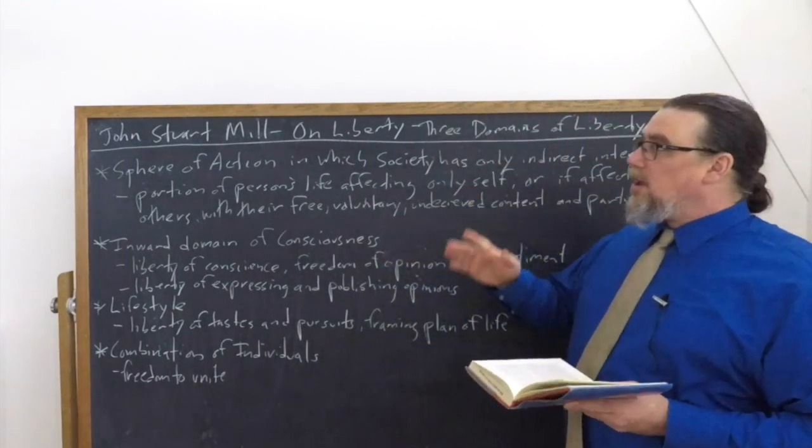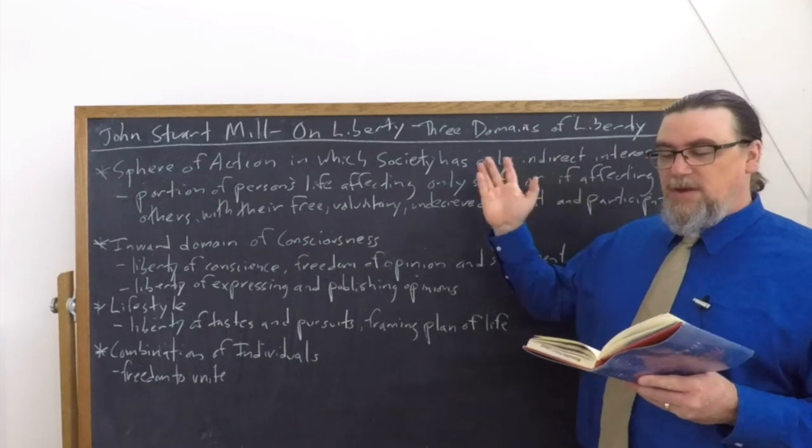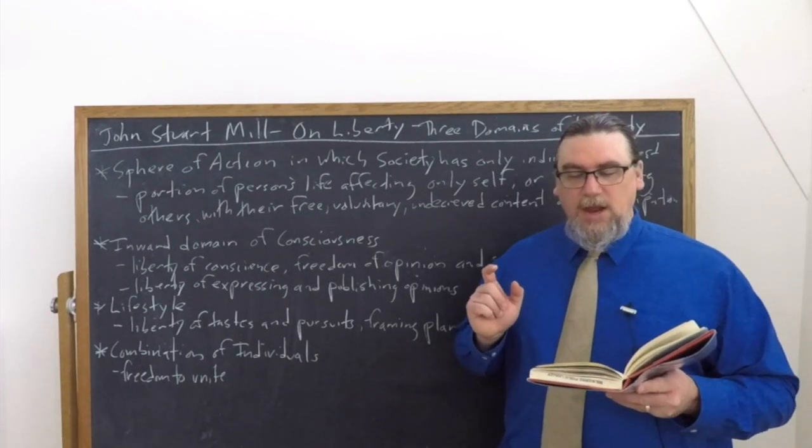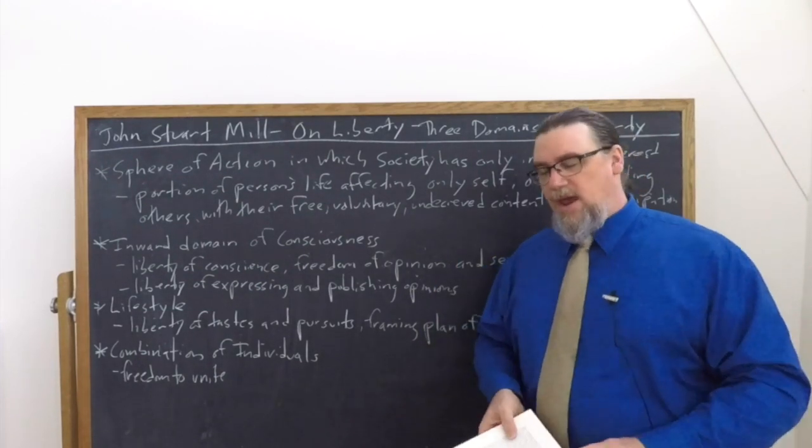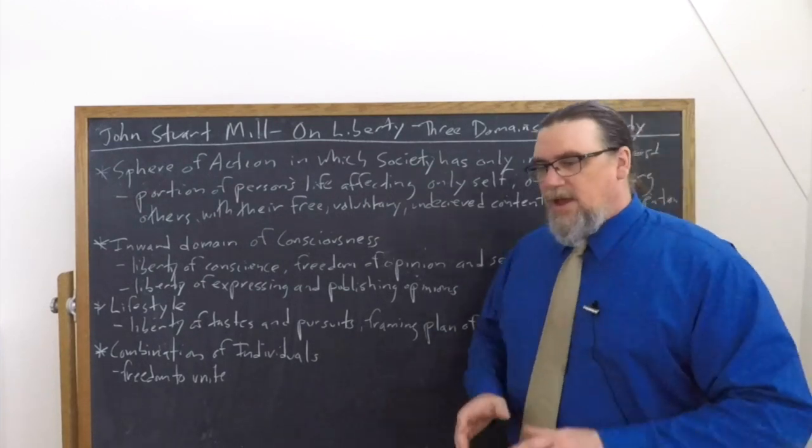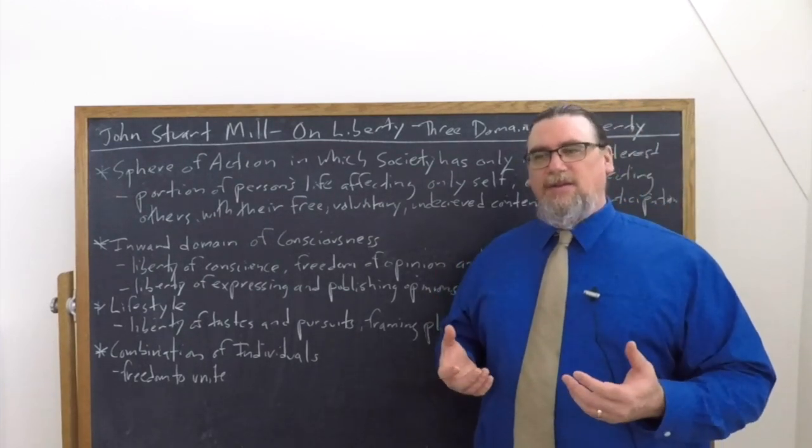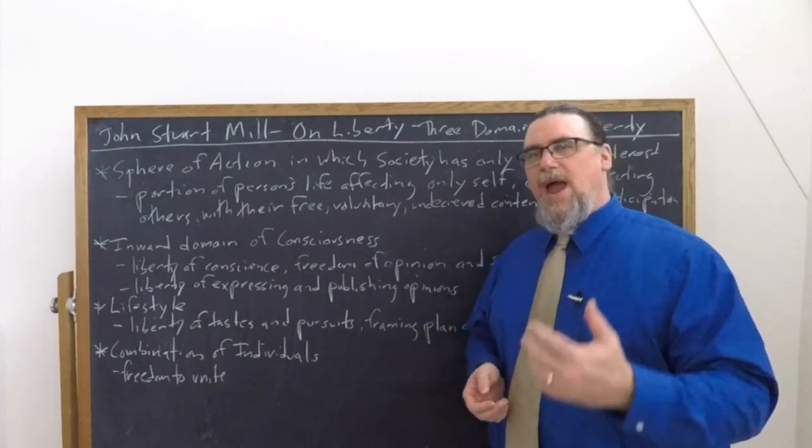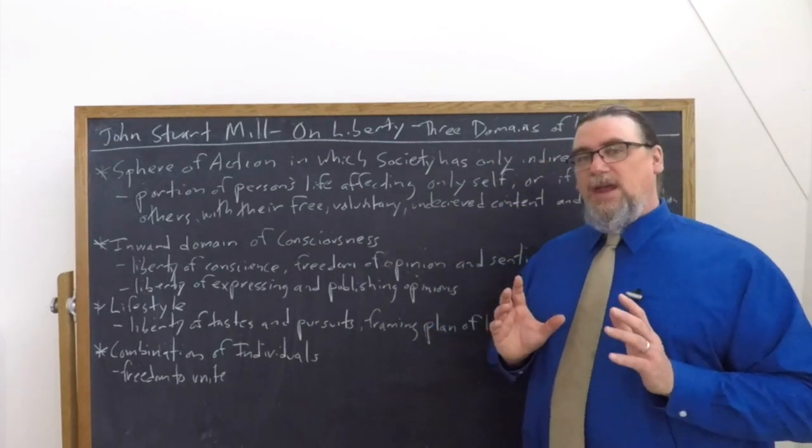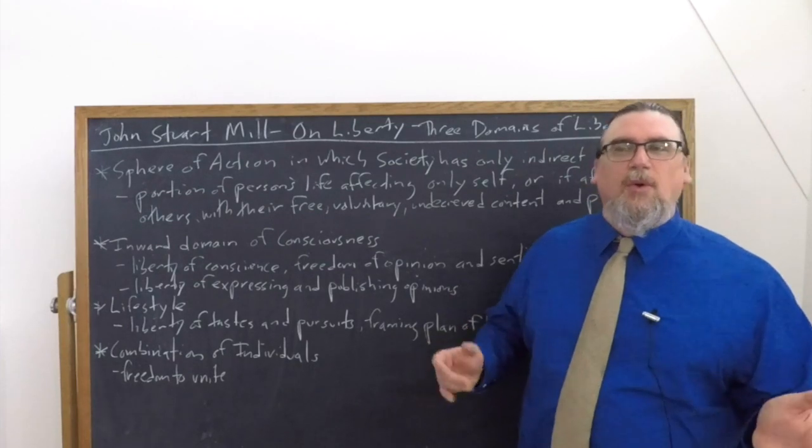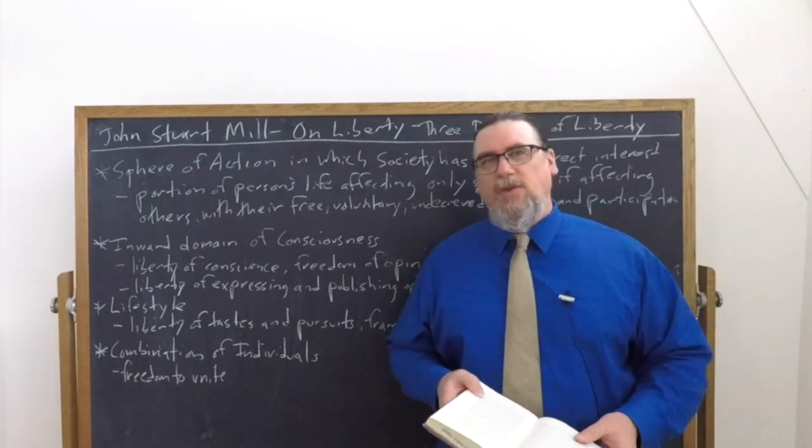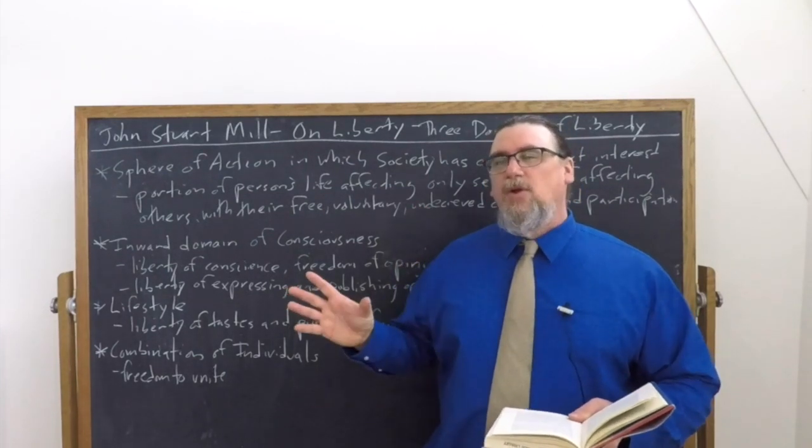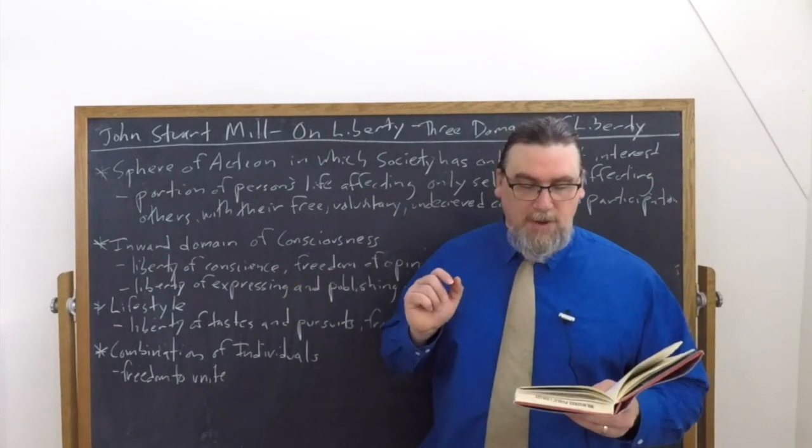He talks first about there being a sphere of action in which society, as distinguished from the individual, has, if any, only an indirect interest. What does that mean, having an indirect interest? Society itself is not acting; it's the individuals who are involved, who are doing things, and society does not have a direct interest as it would in compelling somebody to give testimony in a law case or keeping people from burning their neighbors' houses down. It has only an indirect interest—perhaps it could affect others within society or perhaps it might not.